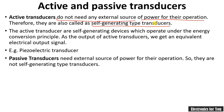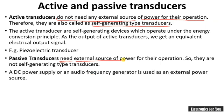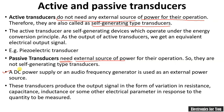Passive transducers are exactly opposite to active transducers. Since active transducers do not need any external power supply, passive transducers do need an external power supply for their operation — they are not self-generating type transducers. A DC power supply or audio frequency generator is used as the external power source. An example is the LVDT, that is the Linear Variable Differential Transformer.